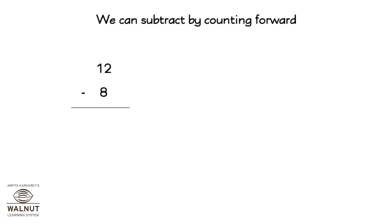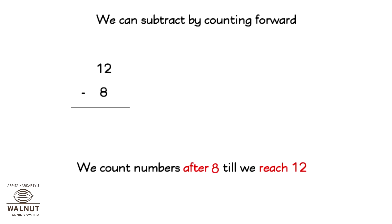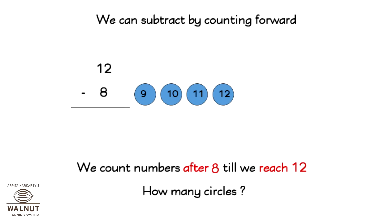How about 12 minus 8? We count numbers after 8 until we reach 12: 9, 10, 11, and 12. How many circles is that? 4. So 12 minus 8 is equal to 4.